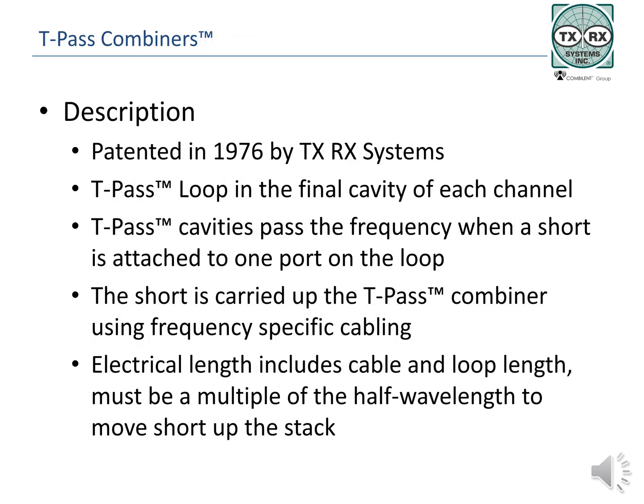The third type of combiner is the TPAS combiner, originally developed and patented by TXRX Systems in 1976. The technique uses a special coupling loop in the output of the final cavity of each channel and couples the signal to the next cavity carrying the next channel. The same technique is then repeated for the number of channels in a system. By using a short circuit on the output loop of the first channel, the signal is reflected or moved up the stack, and all channels appear at the final output connector of the combiner. TPAS combiners use cable lengths in the final leg of the combiner that are cut to specific lengths by frequency, so be careful with changes in the combiner, channel additions, frequency changes, and retuning. The manufacturer should be contacted to calculate the new cable lengths and provide the new cables. Cable lengths must include the cables, electrical connector length, and the loop length of the final TPAS loop in the final cavity of each branch.